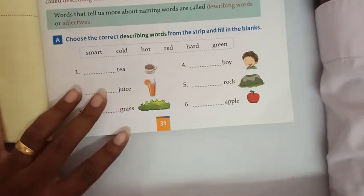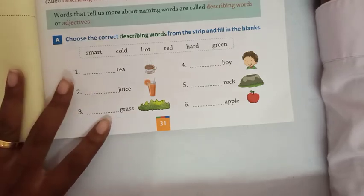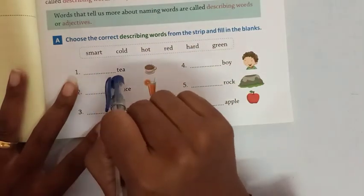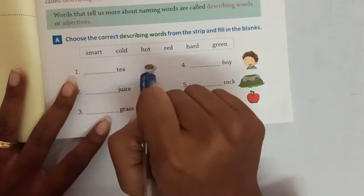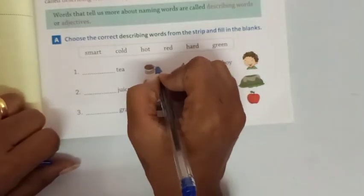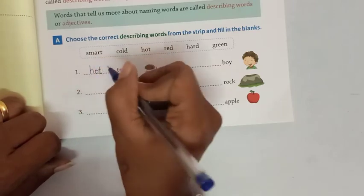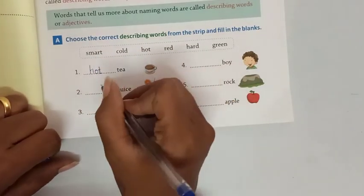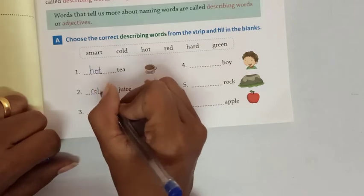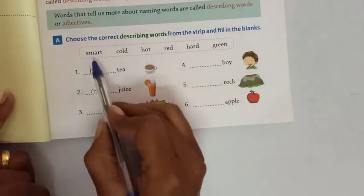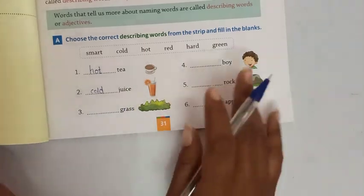So choose the correct describing words from the strip and fill in the blanks. Which is the correct describing word? The first one: hot tea. H-O-T, hot tea. Next is cold juice. So this is how you have to choose the correct describing words and complete this.